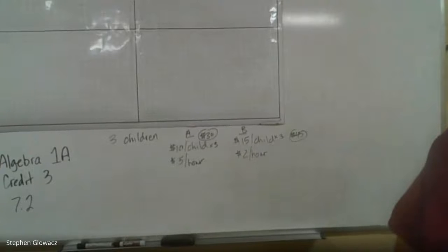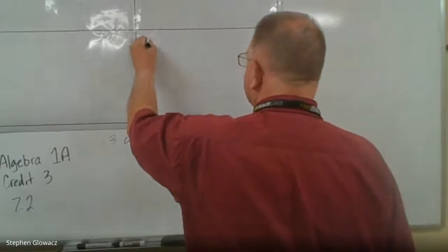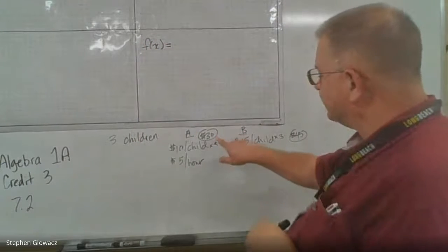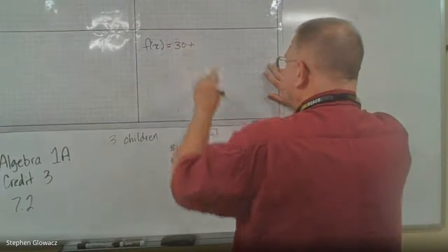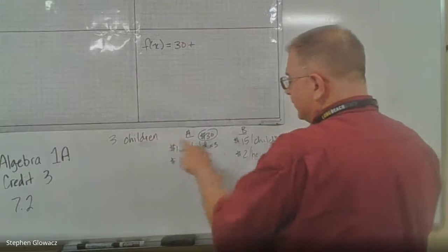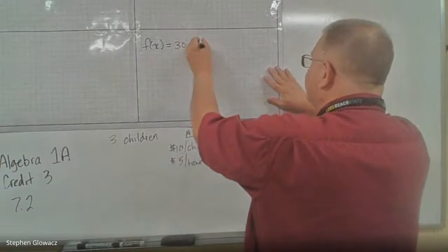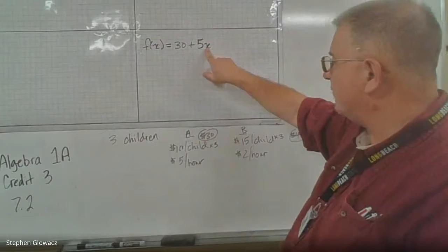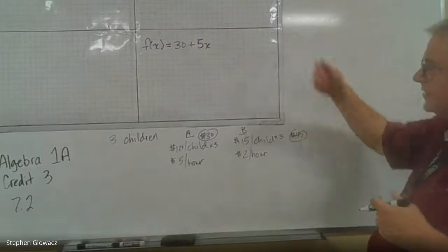Now we'll write the functions using function notation. F of X for babysitter A: it's $30 for the children — that's a flat fee because we know how many children there are — plus $5 per hour. So every hour is $5; one hour is $5, two hours would be $10, et cetera.